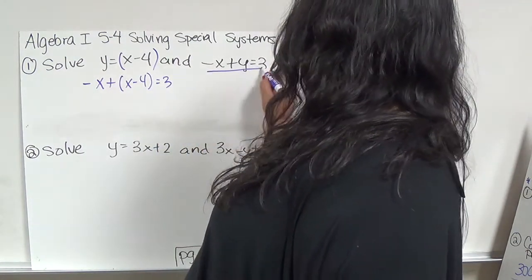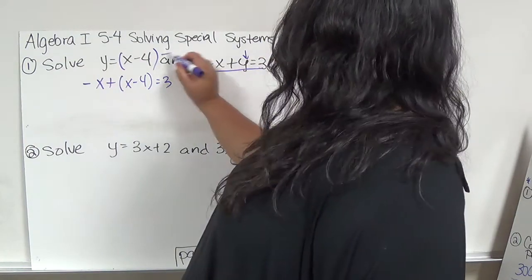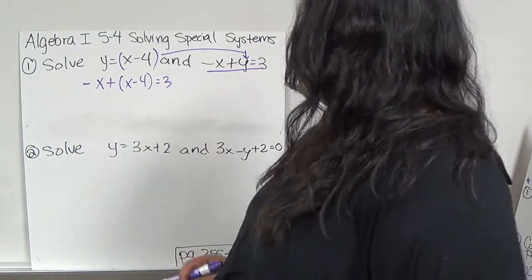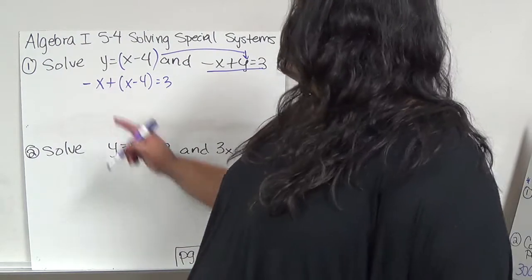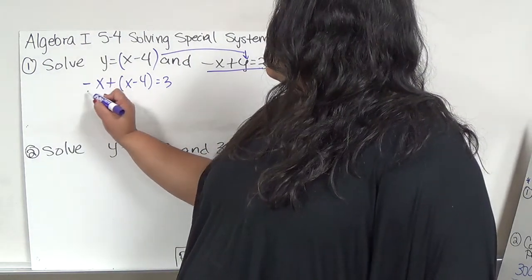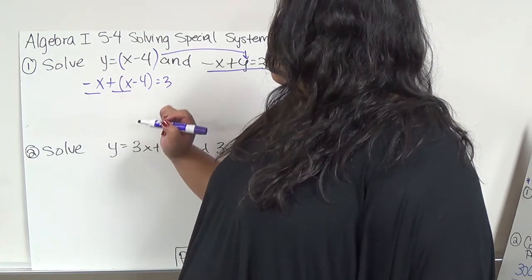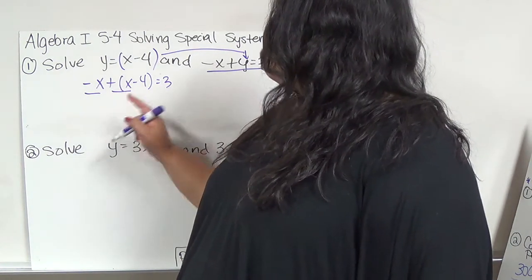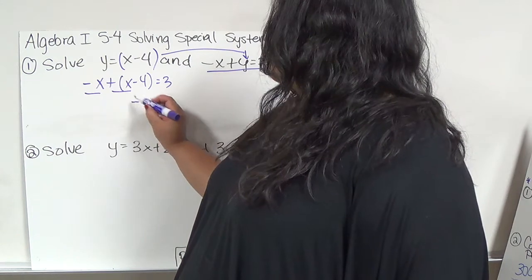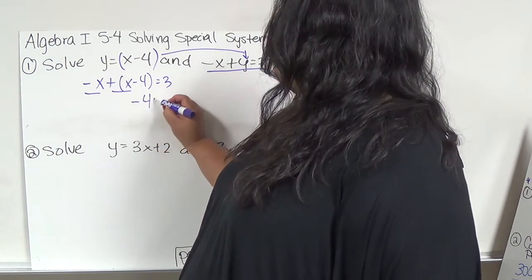I rewrote this whole thing, but instead of this y, I replaced it with the bubble. Now I have it in one term, which is x. So I end up with negative x and positive x, which negative 1 plus 1 is 0. That cancels out and I end up with negative 4 equals 3.